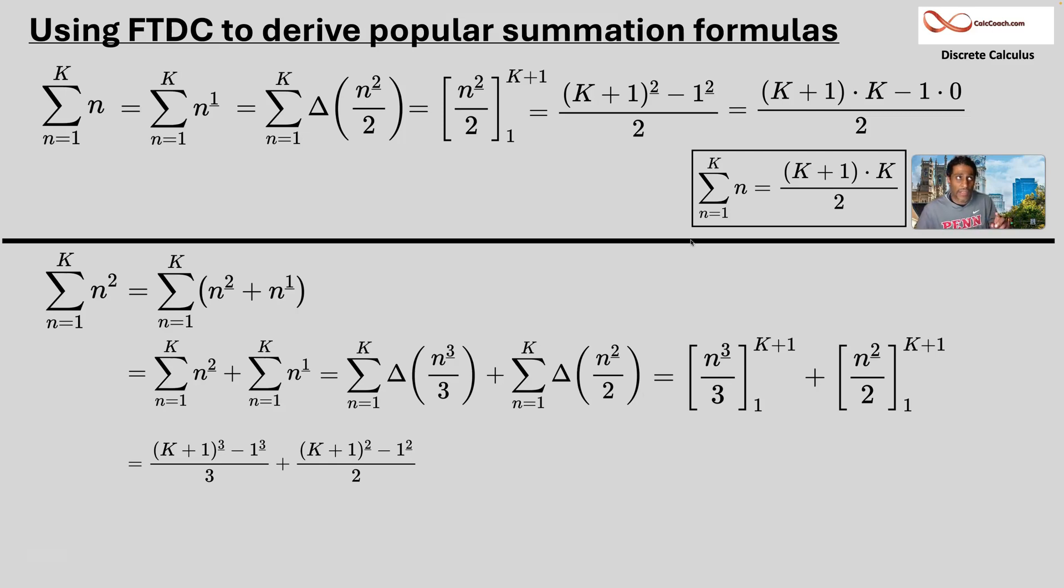K plus one falling three, k plus one times k, times k minus one. And we saw from above k plus one falling two is just k plus one times k. All right. All right. Those zeros are all gone.